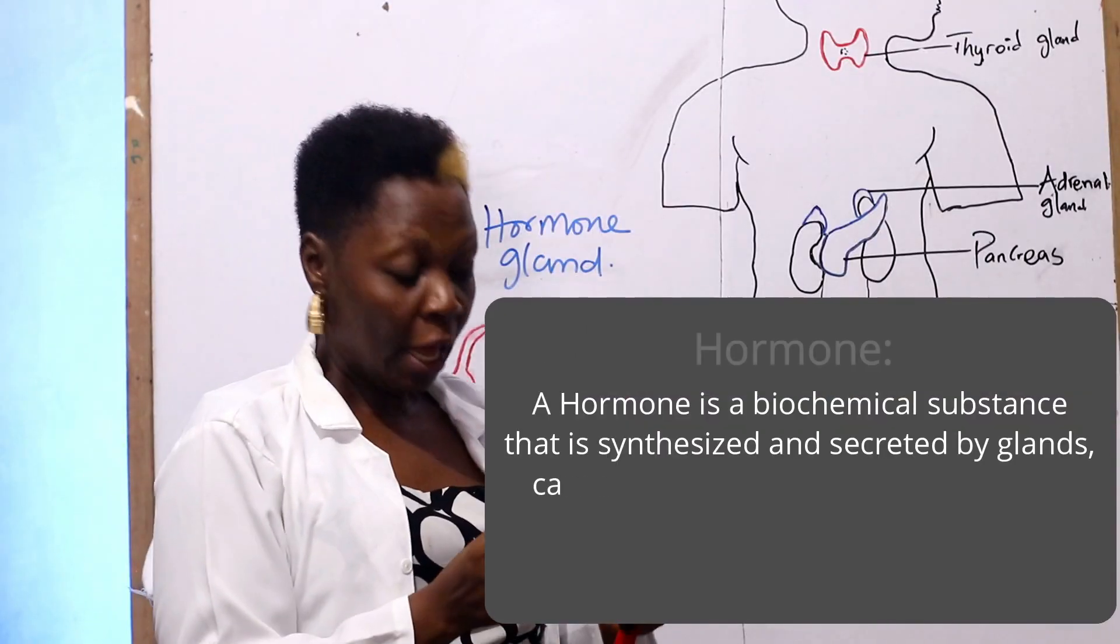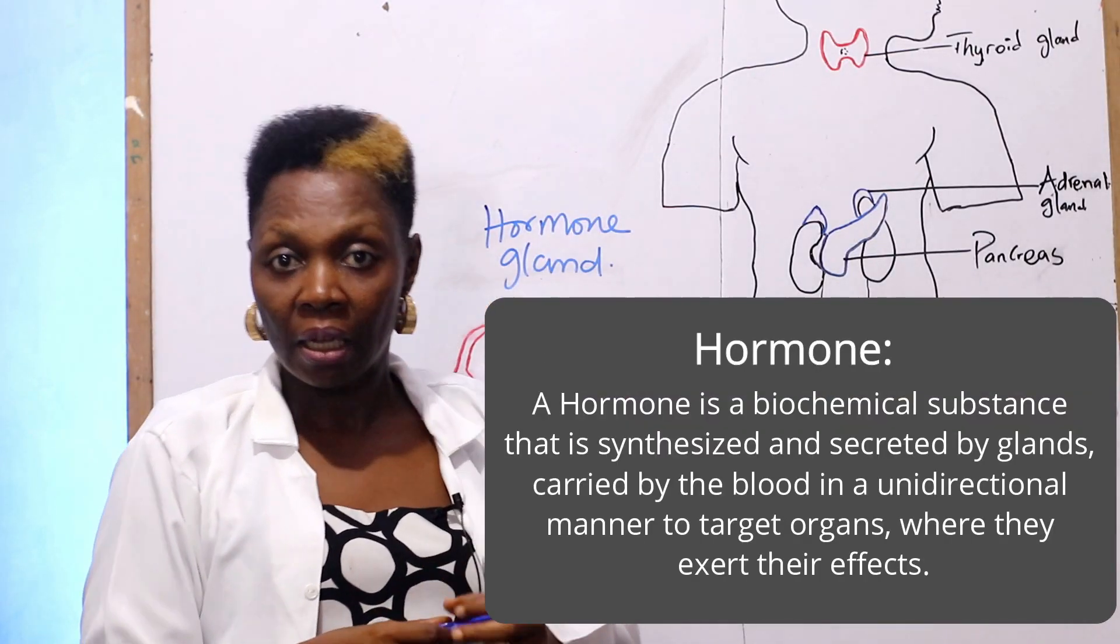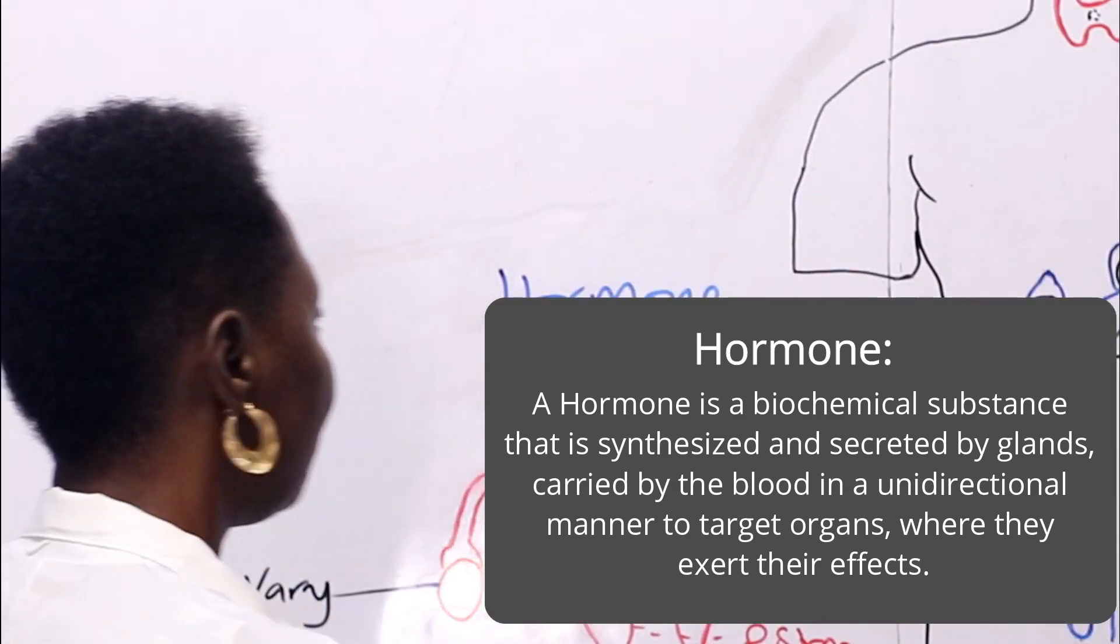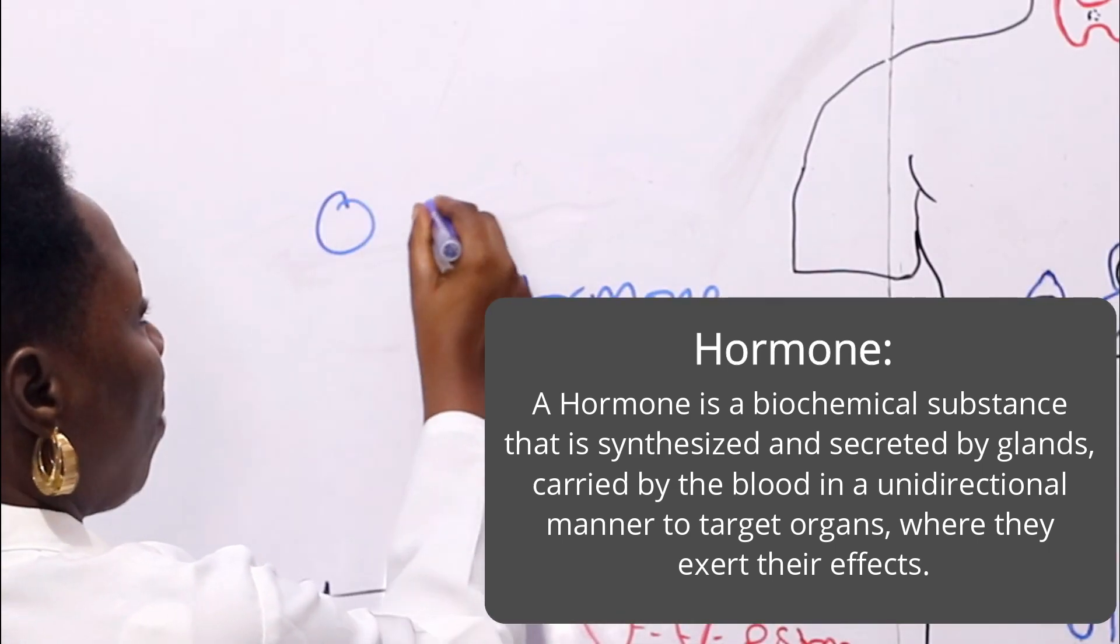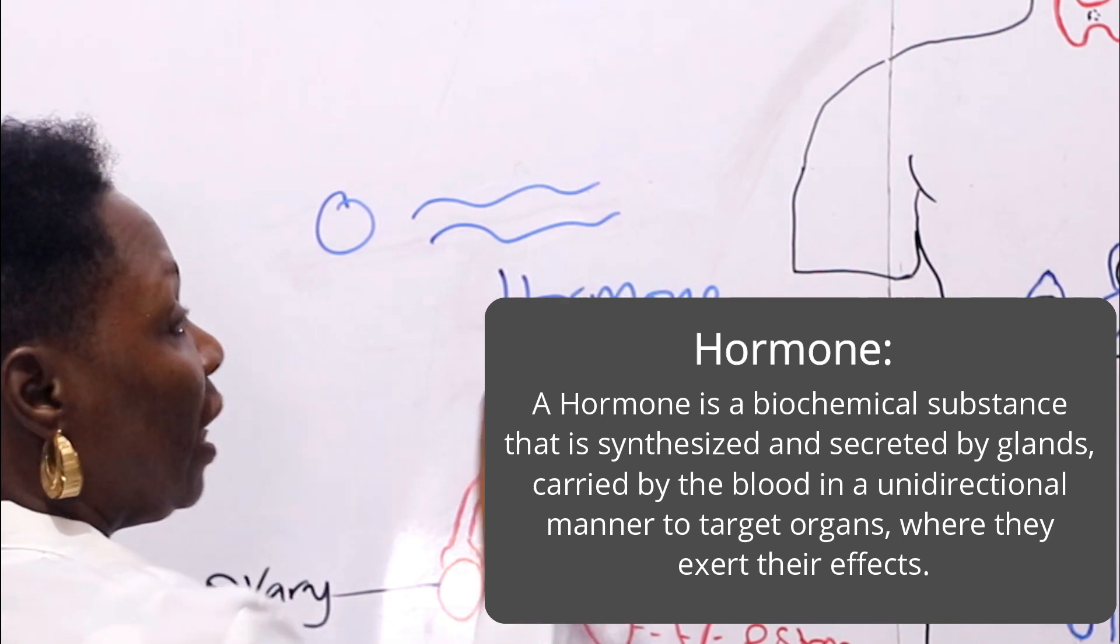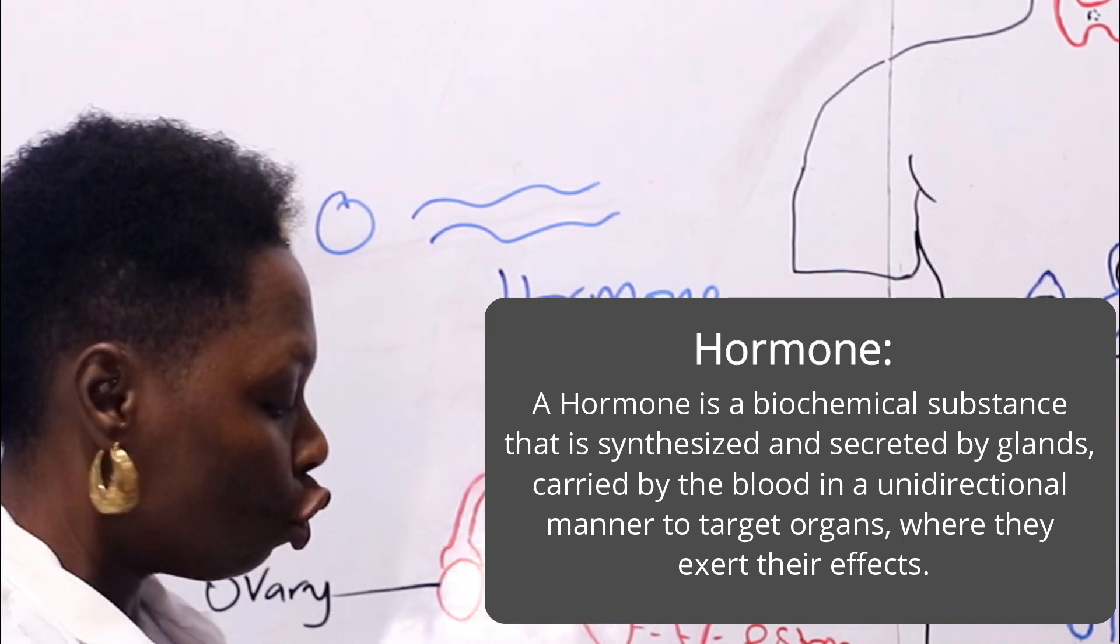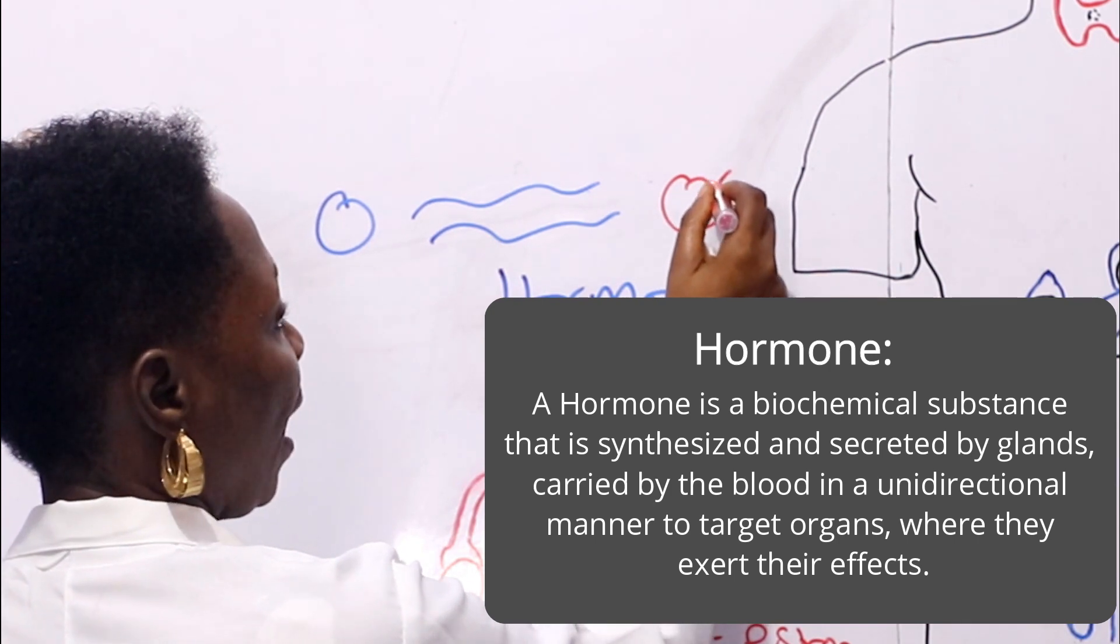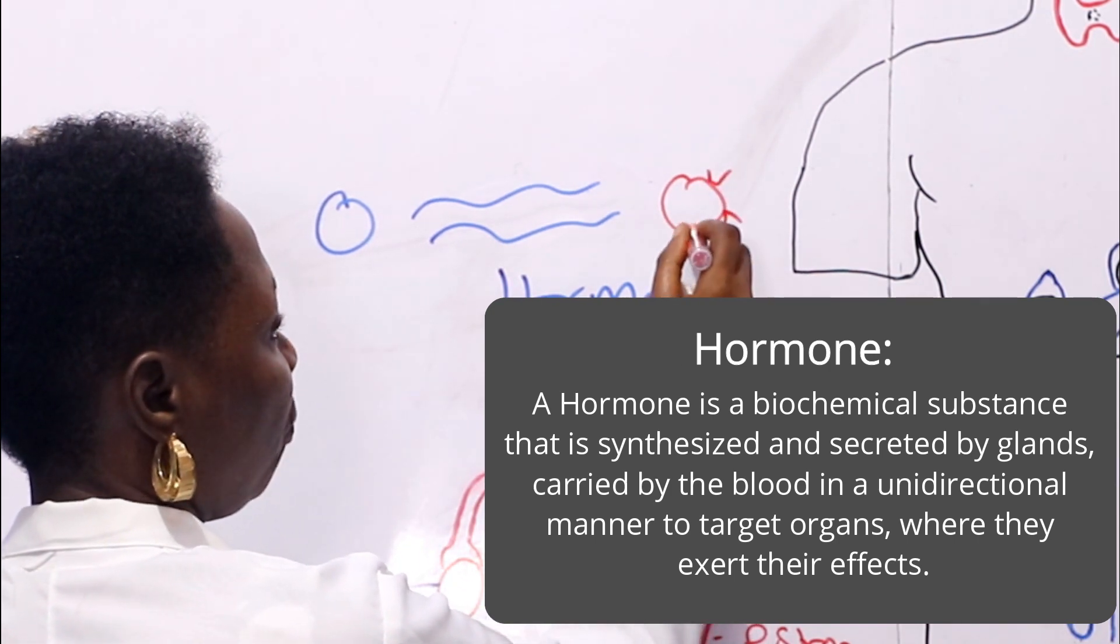What is a hormone? A hormone is a biochemical substance that is synthesized and secreted by glands, carried by the blood in a unidirectional manner to target organs where they exert their effects.